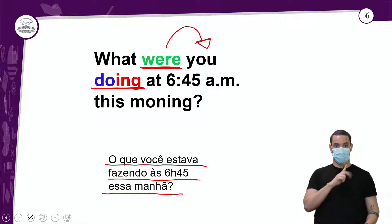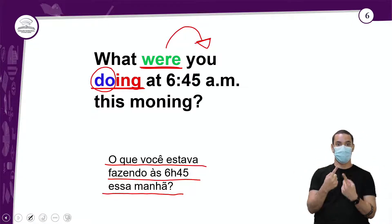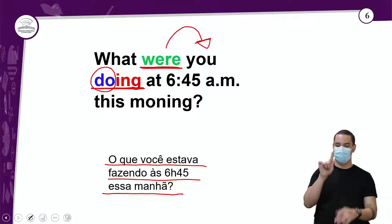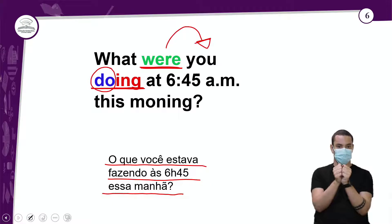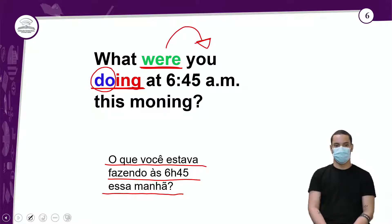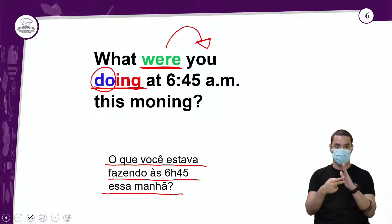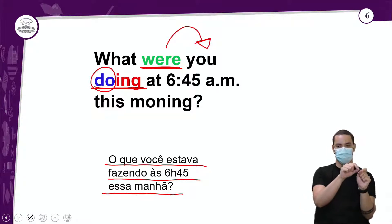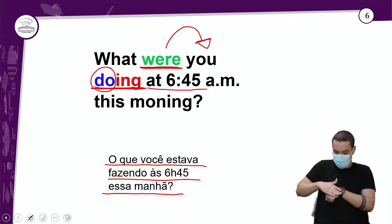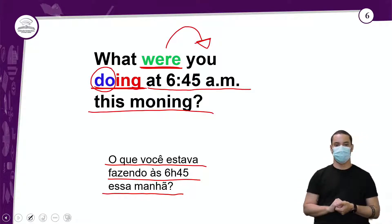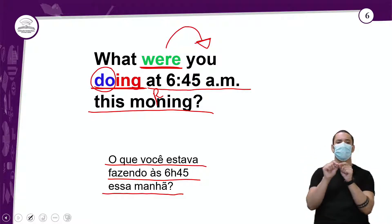Temos 'doing', representado pelo verbo 'do' — o fazer. Só que como eu falo 'fazendo', eu preciso acrescentar o -ing no final do verbo. Aqui você só acrescenta e o verbo fica 'doing' — de 'fazer' foi para 'fazendo'. E aí temos o complemento: 'at 6:45 a.m. this morning' — o que você estava fazendo às 6h45 essa manhã?